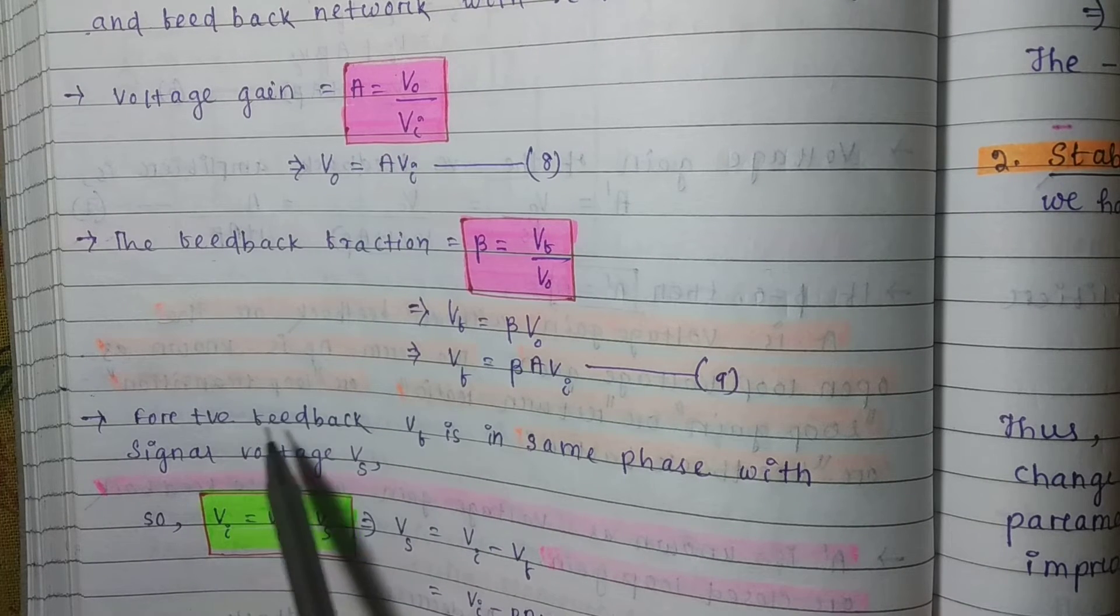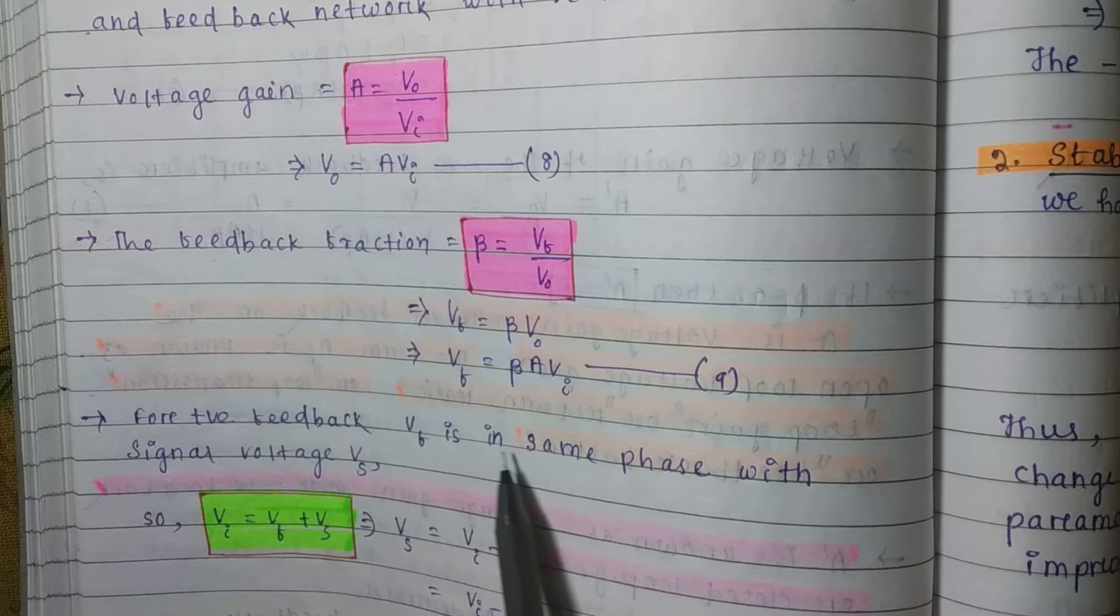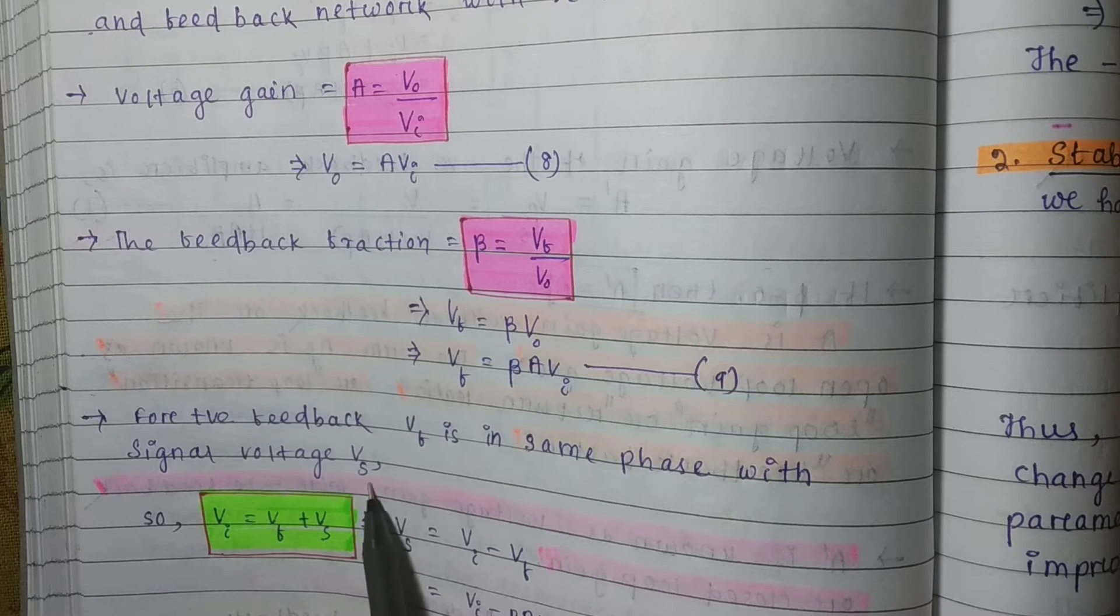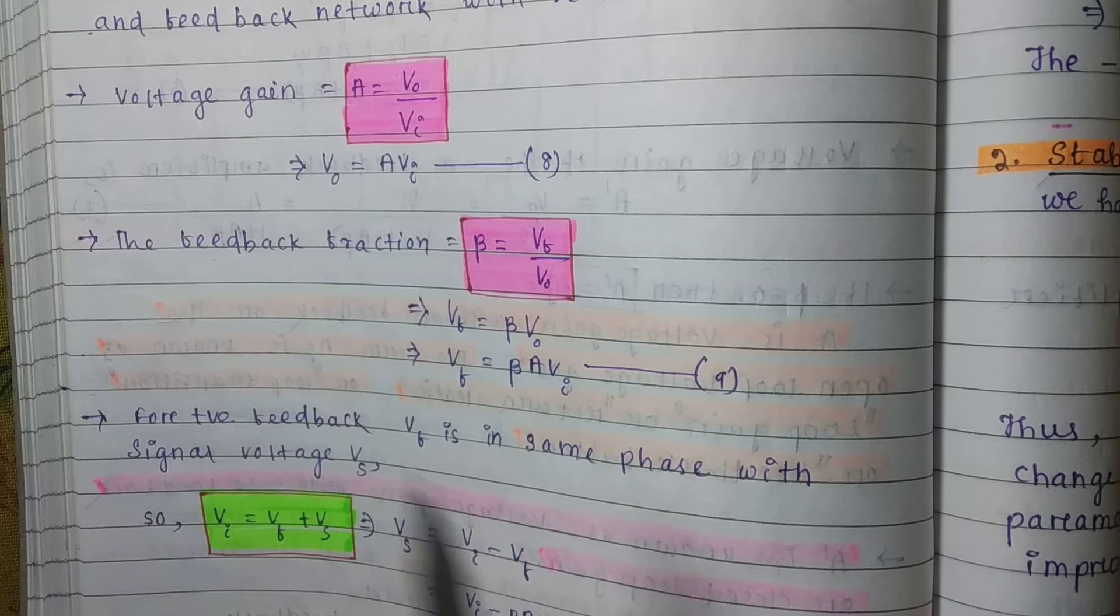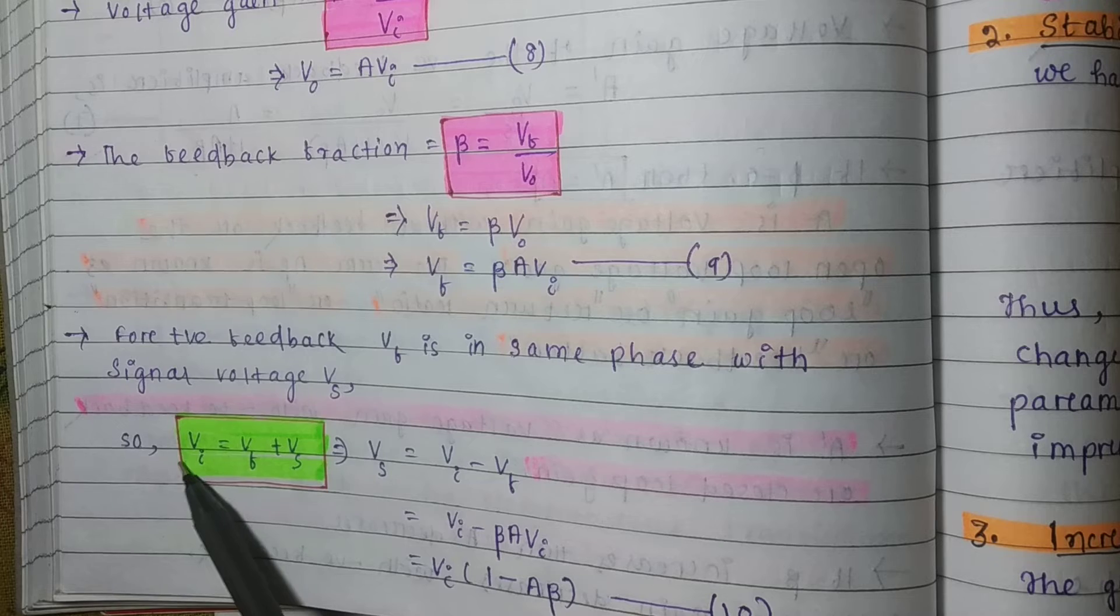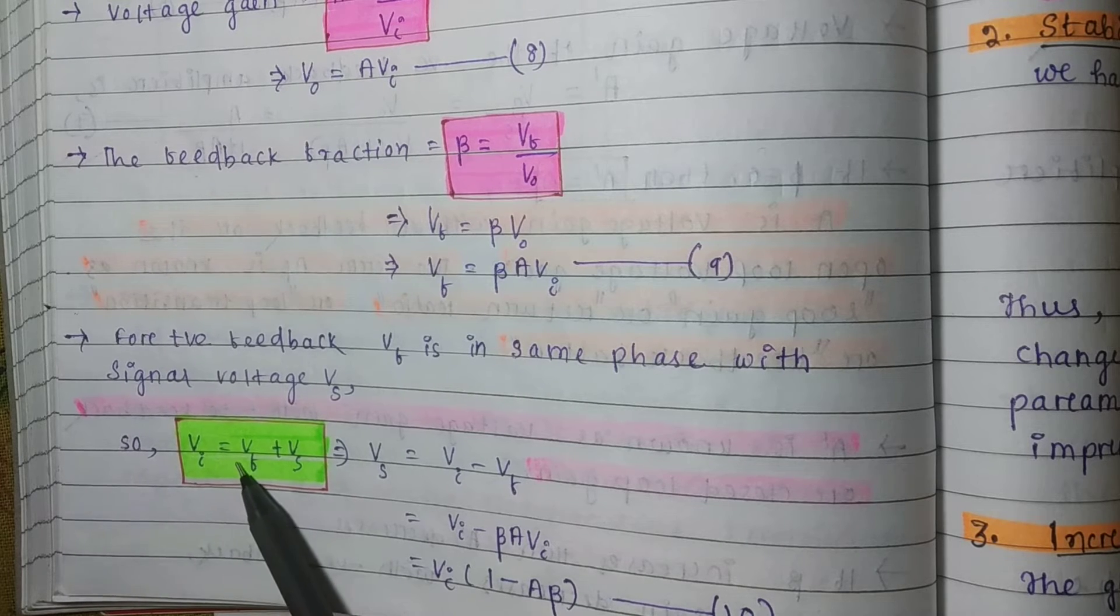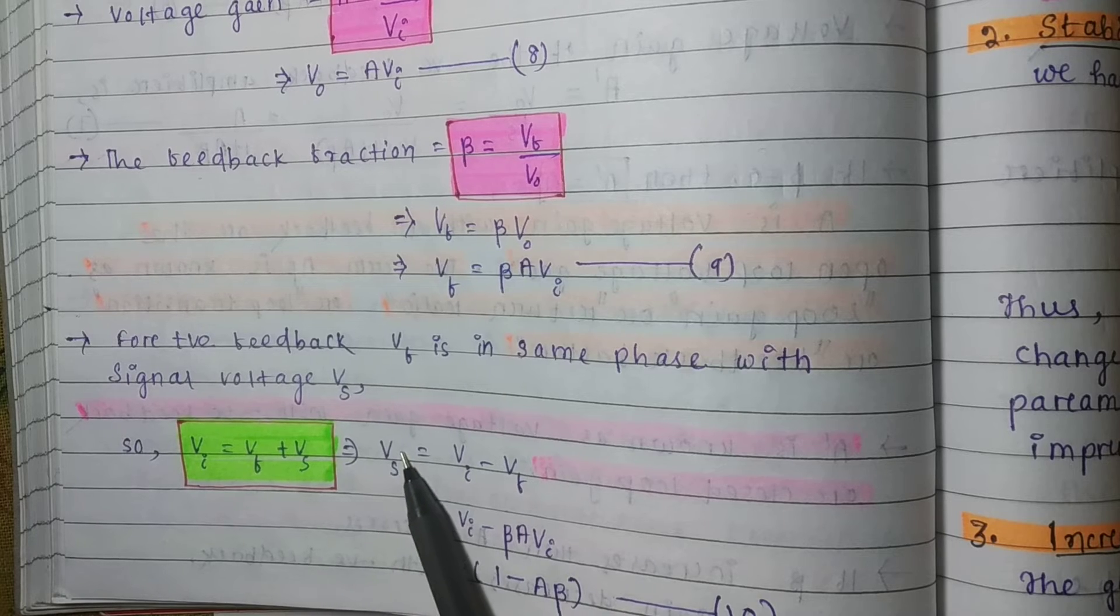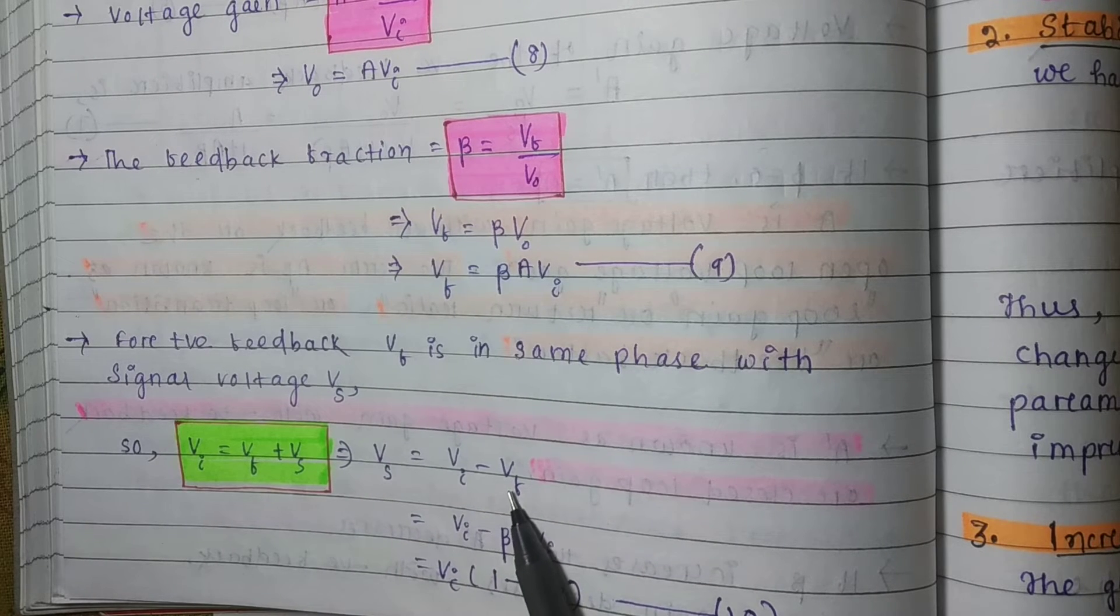For positive feedback, VF is in same phase with signal voltage V S. V I equals to VF plus V S. That implies V S equals to V I minus V F.